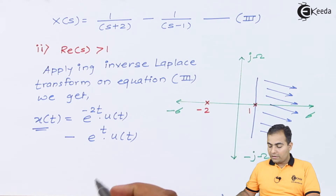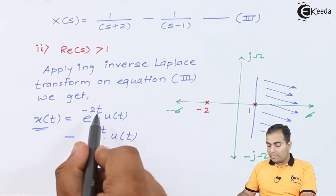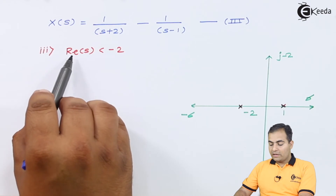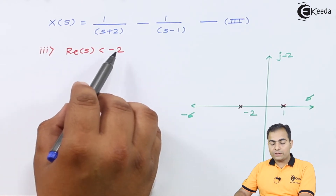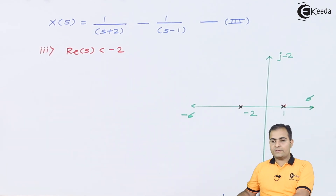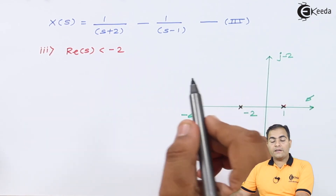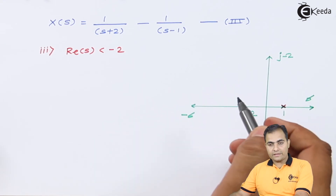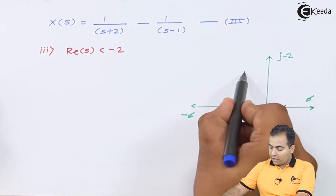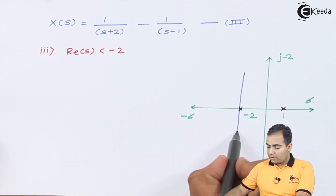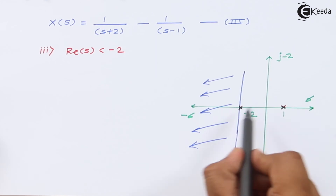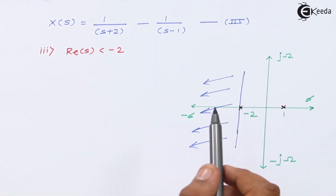For ROC Case 3: Re(s) < -2, a left-handed anti-causal ROC. The ROC exists on the left-hand side of the left-most pole, which is -2. All poles follow this left-handed sided ROC, which means all unit steps are replaced by -u(-t). Signs will change accordingly.